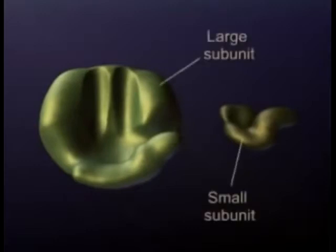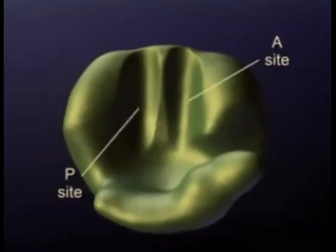Ribosomes consist of large and small subunits. The large subunit has two binding sites for transfer RNA: the P and A sites.